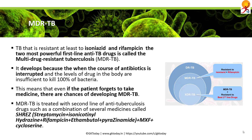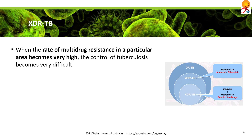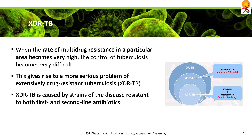MDR-TB is treated with a second-line combination of anti-tuberculosis drugs called SHREZ, which stands for Streptomycin, Isoniazid (isonicotinoyl hydrazine), Rifampicin, Ethambutol, Pyrazinamide, and Moxifloxacin with Cycloserine. XDR-TB, or extensively drug-resistant tuberculosis, arises when multi-drug resistance in a particular area becomes very high. It is caused by strains resistant to both first and second-line antibiotics, confirming that TB control needs to be significantly strengthened.